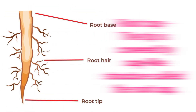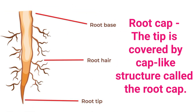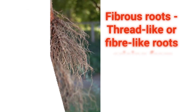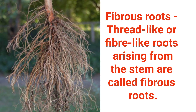Hair-like processes near the root tips are called root hairs. The root tip is delicate, so this is the region of growth of the root. The tip is covered by a cap-like structure called the root cap. The root cap protects the root tip from injuries. Thread-like or fiber-like roots arising from the stem are called fibrous roots.